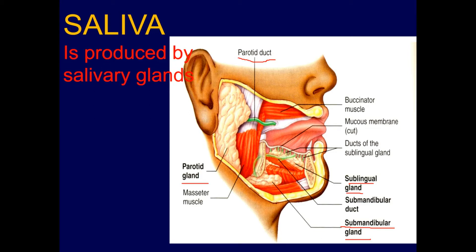The sublingual and submandibular glands secrete a fluid that contains a higher concentration of proteins and is more viscous, while the secretion drained by the parotid gland is a watery secretion.